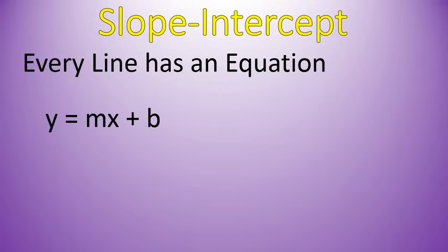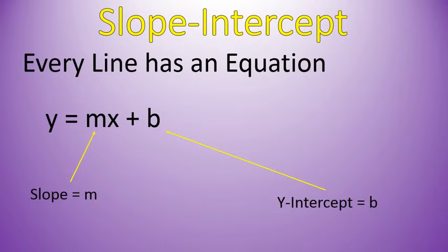So again, it's arranged like this. Y by itself on the left, some number times x plus another number. The number that's in front of x is our slope, and the number at the end is our y-intercept.